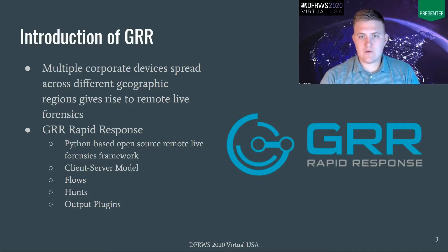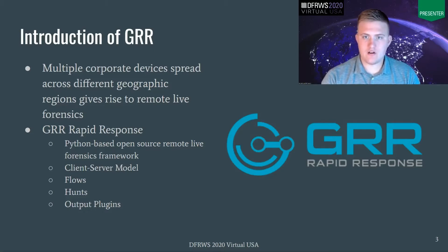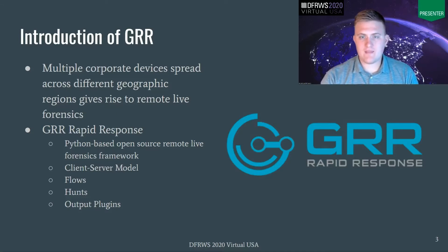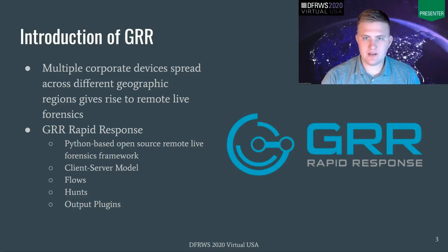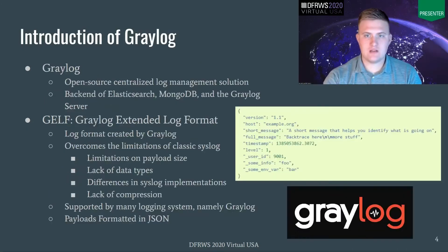When you want to run a flow over multiple clients, GRR uses what are called hunts. And finally, when that data is returned from clients, you can use what's called an output plugin to send that data off somewhere else.